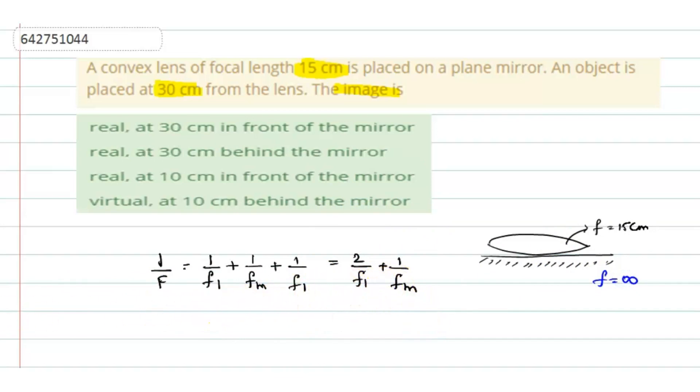So when you substitute that, you will get the value like this. That 1 by f will be having an equation 2 by 15. They have given the focal length of our lens as 15 plus 1 by infinity. 1 by infinity is 0. So which means that 1 by f will be equal to 2 by 15.